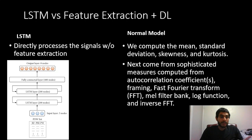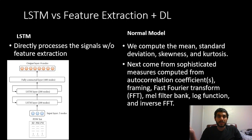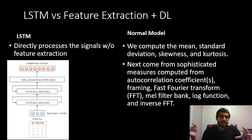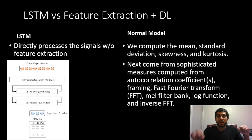With the LSTM, we're directly feeding the signal data in. For the deep learning model with feature extraction, you compute a few different metrics: standard statistical computations like means, standard deviations, skewness, and kurtosis. Then more sophisticated measures including autocorrelations, framing, fast Fourier transforms, filter banks, and mel-frequency FFTs. If you want to know more about how to read these, I'd suggest reading the paper, or I'll link an article below on how to extract features from signals.